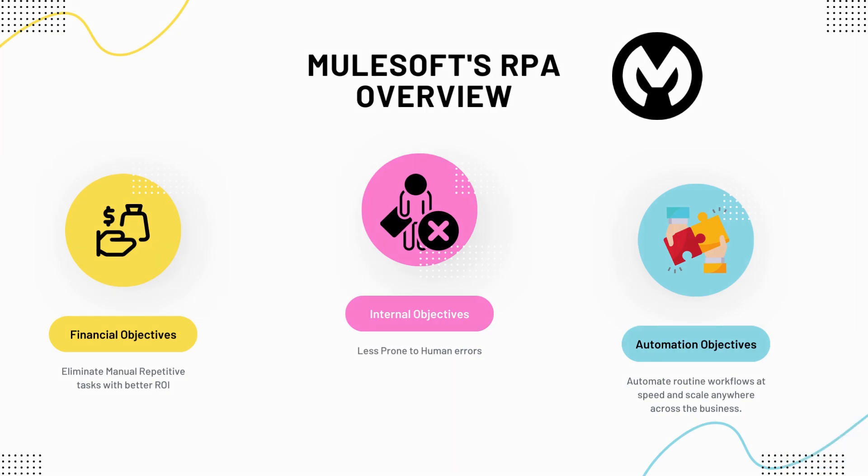RPA stands for Robotic Process Automation, which enables you to automate business processes and tasks by using bots. This helps save time and prevent introducing human errors. To assess the need for RPA, we consider the following three objectives.